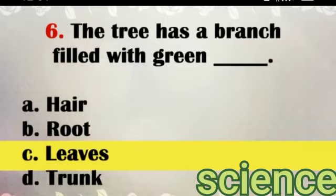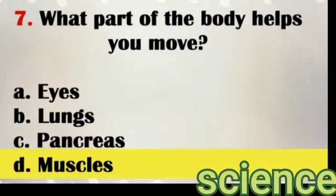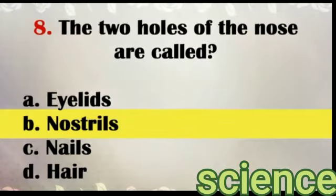Question number 6: The tree has a branch filled with green what? Answer: Leaves. Question number 7: What part of the body helps you move? Answer: Muscles.